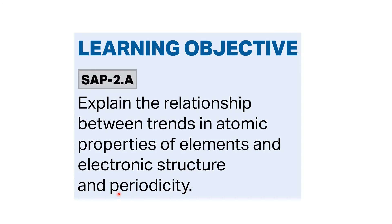The learning objective of this topic was to explain the relationship between trends in atomic properties of elements and electronic structure and periodicity. In this video, I covered what periodicity is and discussed four properties — atomic radius, ionization energy, electron affinity, and electronegativity — showing how the trends in these properties change as we move along a group or across a period and how they are linked to the electronic structure of the atom.